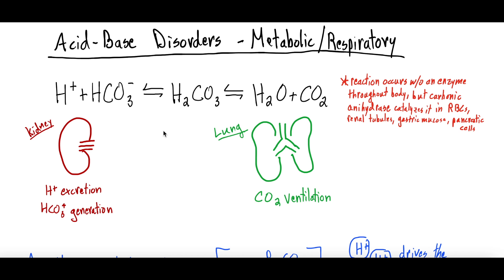Today we're focusing on primary metabolic and respiratory acid-base disorders: what are they, why do they happen, how do we determine what is metabolic versus respiratory, and how can we conceptualize the physiology to better remember what drives each? To do that, we'll start with the main buffering system equation of the body.